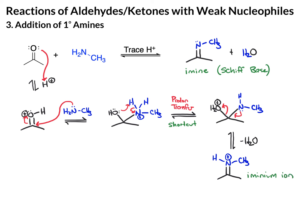Now just to get to the final product, a weak base can come in and take this proton off of the nitrogen, which will leave you with the imine. Make sure you take note that this is another equilibrium reaction. And similar to the acetal formation that we talked about earlier, because water is generated as a product of this reaction, the easiest way to drive this reaction to the right is to remove water as it's formed.